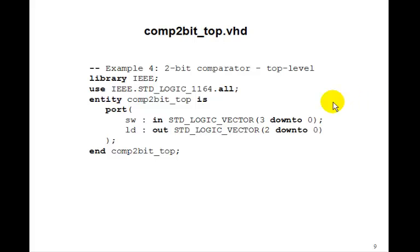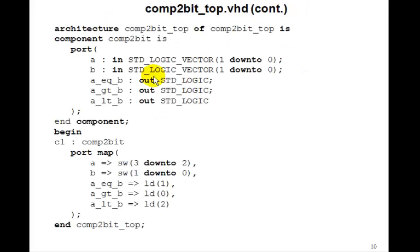Now, here's the top level design. We'll have four switches for the inputs, three down to zero. And three bits for the outputs to represent the A less than B, A greater than B, and A equal B. Again, we have to put the component declaration between architecture and begin for comp 2-bit. And then we'll just port map the outputs to wire it up. A will connect to switches 3 down to 2, B will connect to switches 1 down to 0. We'll make A equal B the middle LED, LD1. We'll make A greater than B the right most LED, LD0. And A less than B, we'll set to LD2.